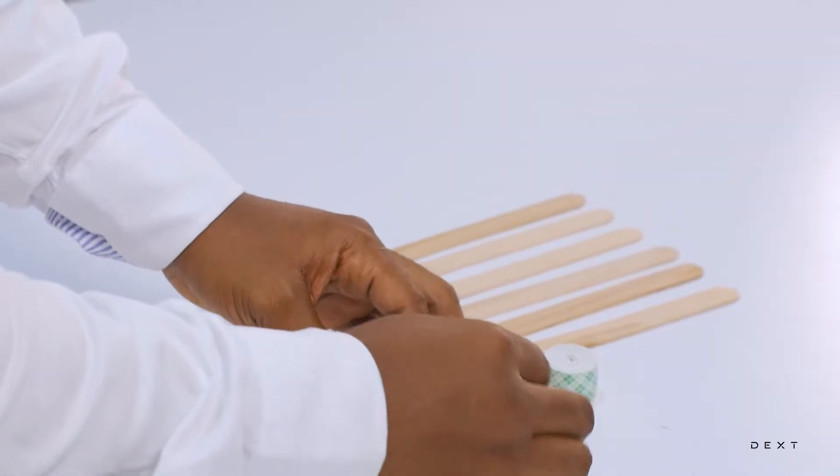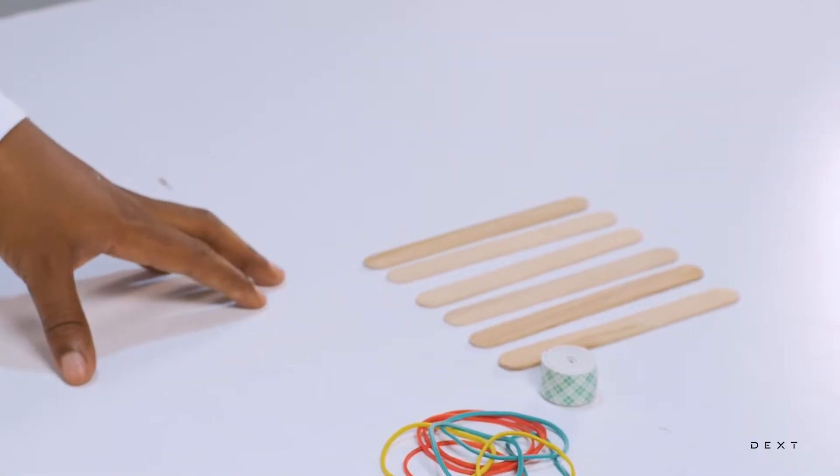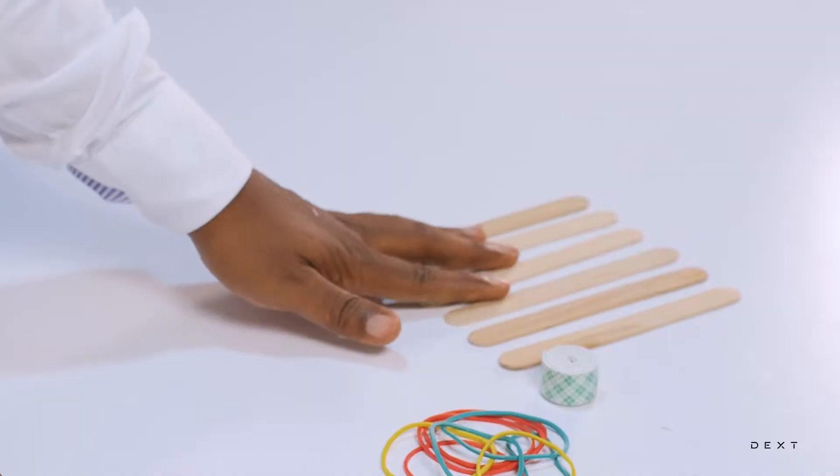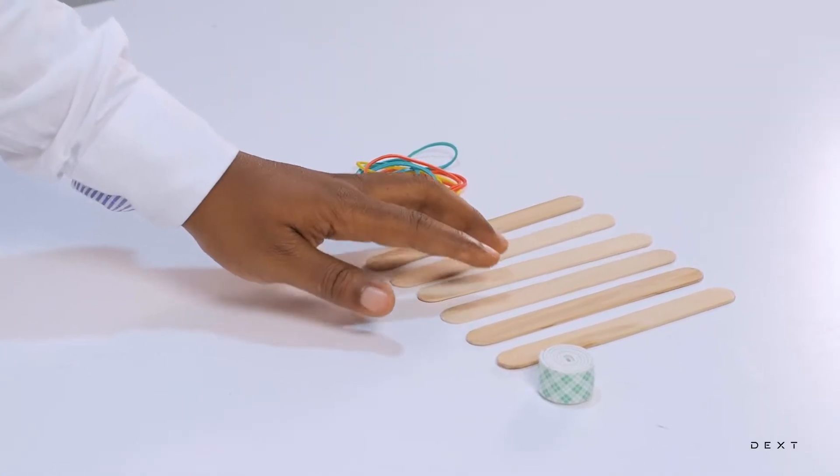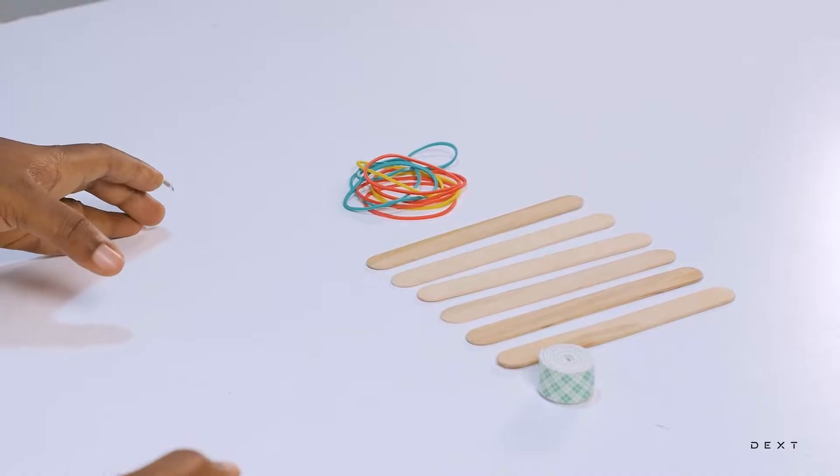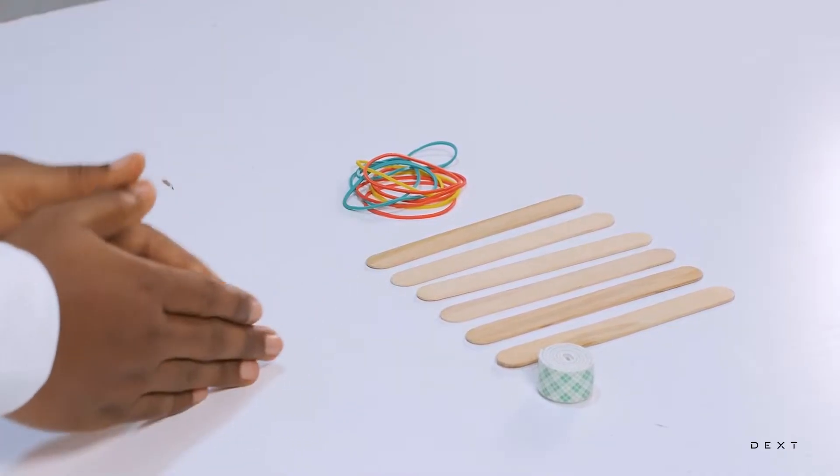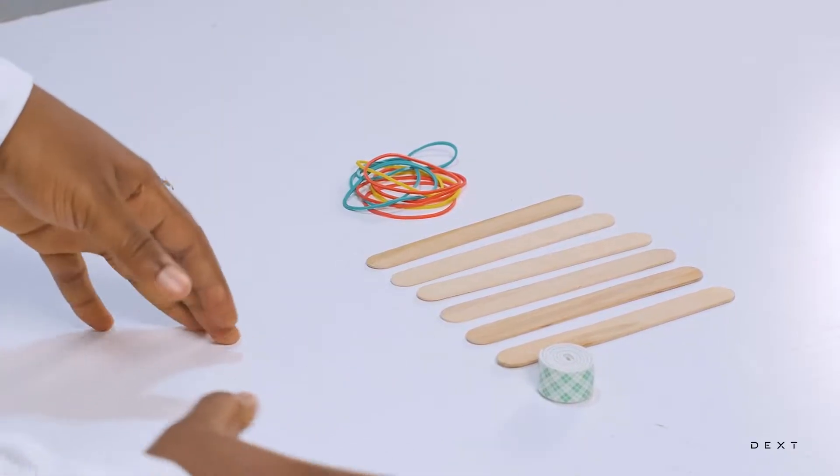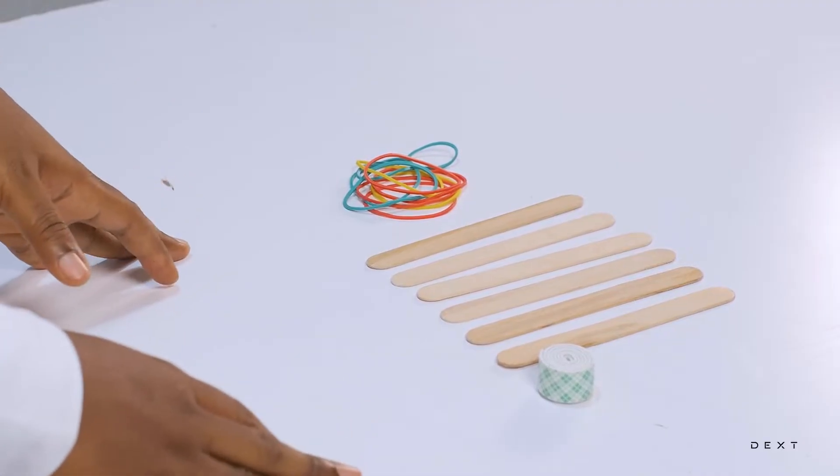Okay, we have some rubber bands here and then we have some popsicle sticks. So how do we build, there are several ways that we can build this device, but I am going to show you one way and then you can find other interesting ways of building it.